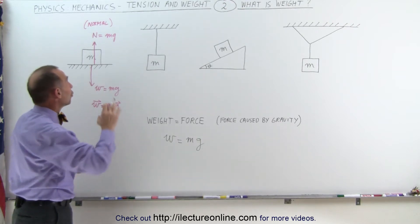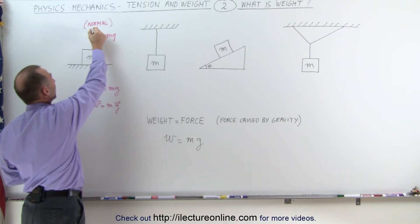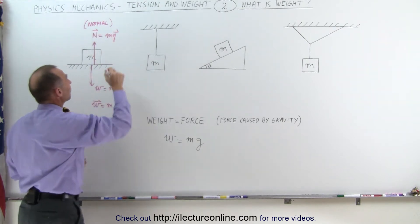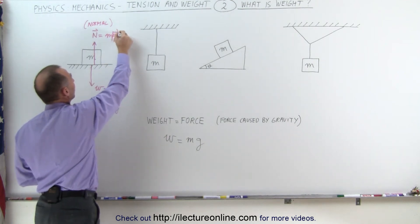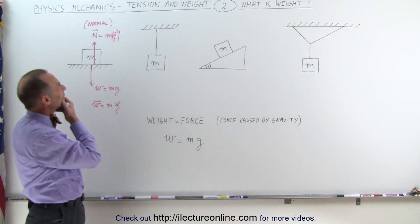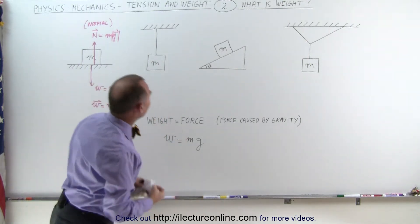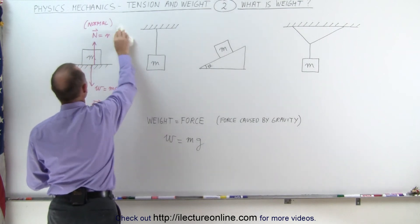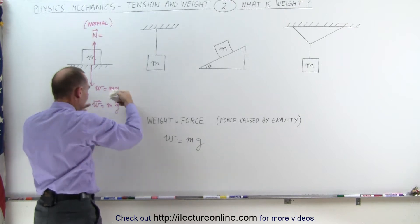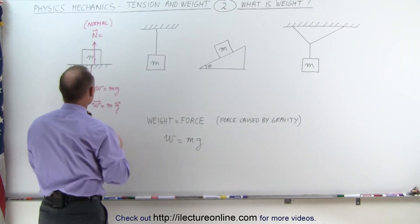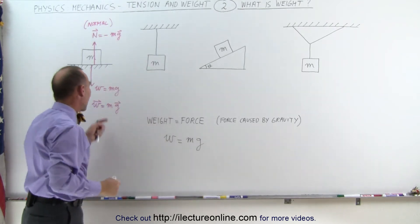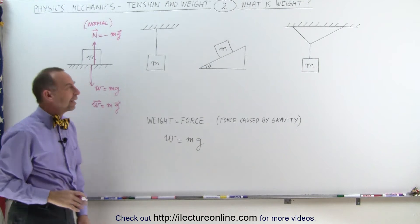We can also think of the normal force as a vector. However, since g is typically a negative quantity, we need to express the normal force carefully. We can write it as negative mg, indicating it is in the opposite direction from the weight of the object, and that works.